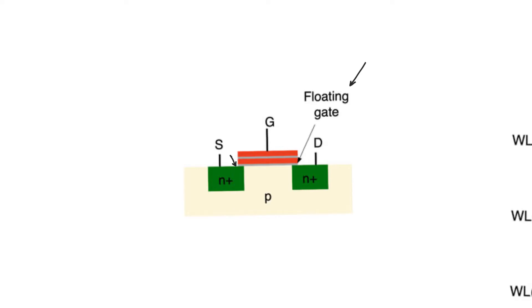The trade-off with flash is that flash memories cannot have cell-by-cell erasure. There is no way to pick a specific bit and erase it; instead, you have to erase a whole bunch of cells at once — usually the entire row or the entire column of a certain array. This is because, as we explored with double EPROMs, when we remove the access transistor, there is no way to erase a single cell.